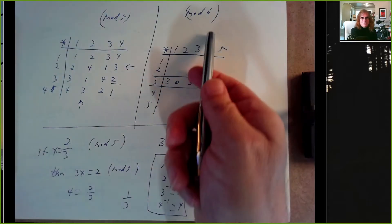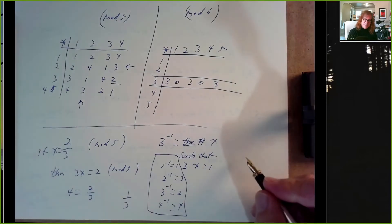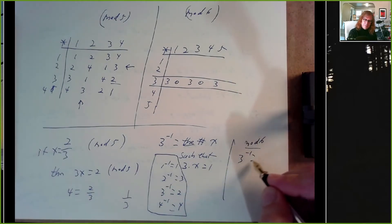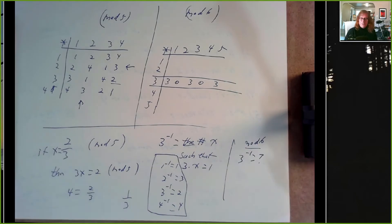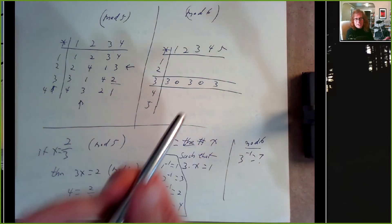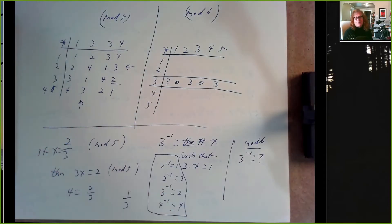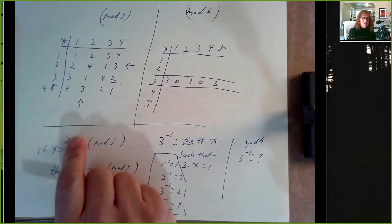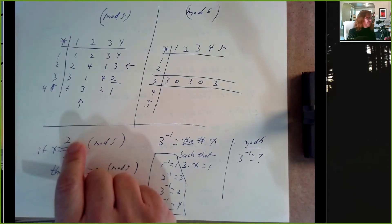So 2/3 mod 5 is just 2 times 3⁻¹ = 2 times 2 = 4. This makes sense as long as inverses exist and are unique, which is guaranteed when we work over a prime modulus. If we work modulo 6, there is no inverse for 3 — when we multiply 3 by anything we get either 3 or 0. So here we don't always have inverses, but over a prime we do. This is one reason prime numbers are cool.